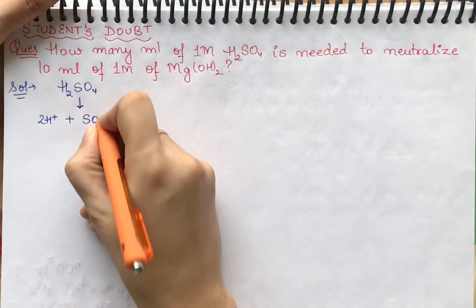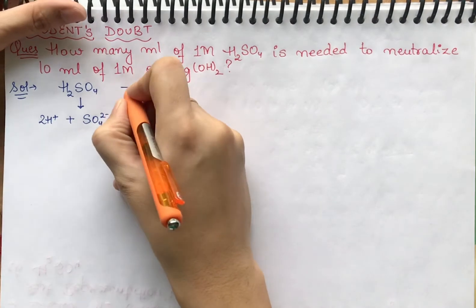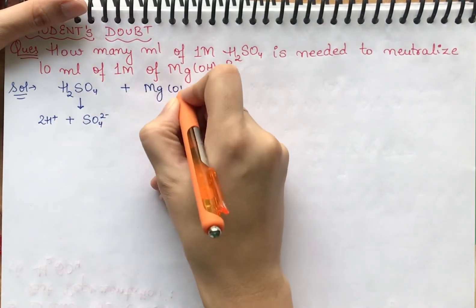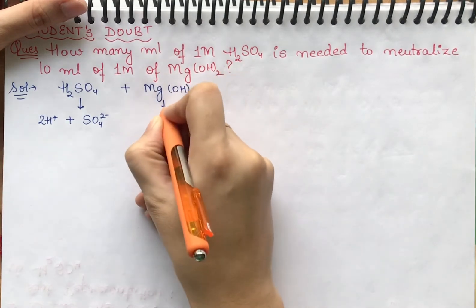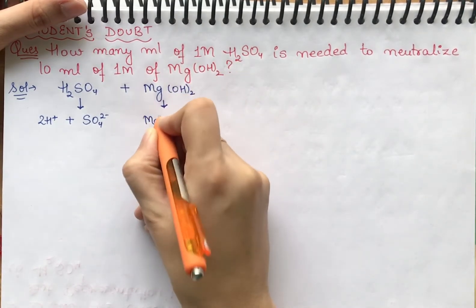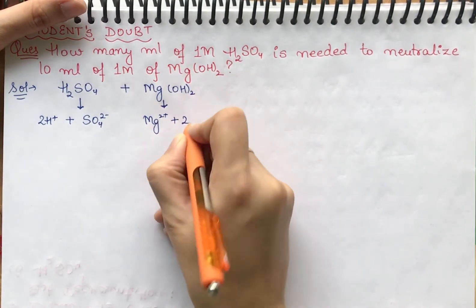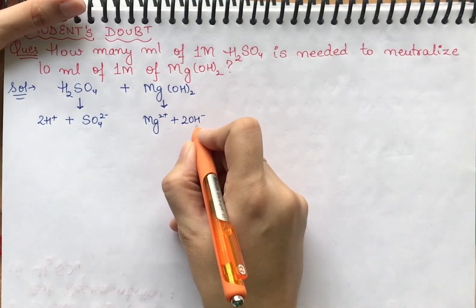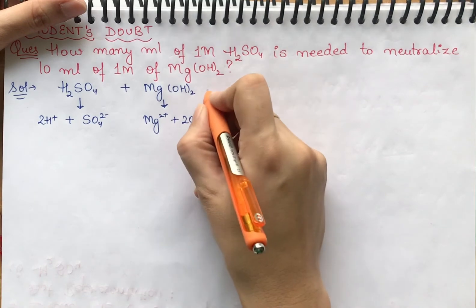And SO4 will be negative. For Mg(OH)2, we have Mg2+ plus 2OH- ions. These OH- ions are the proof of basicity.